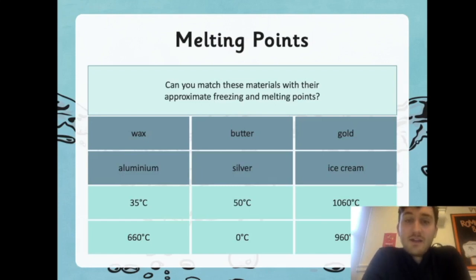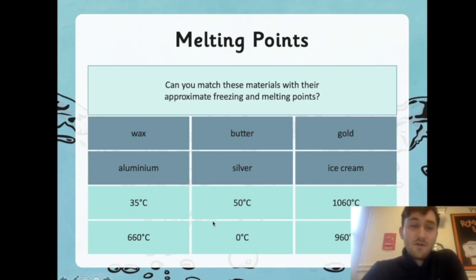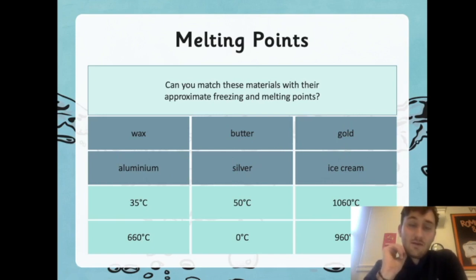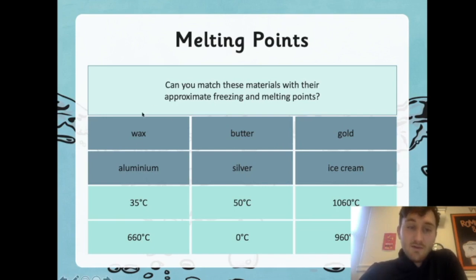Can you match these materials with their approximate freezing and melting points? We've discussed some of these already. We've got wax, butter, gold, aluminium, silver, and ice cream. Have a go — you could write them down on a piece of paper and try to match the materials with their freezing and melting points. Give that a go, and then we can see if you've got the right answers.